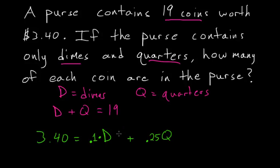Now we have two equations and two unknown variables. From the first equation, we can simplify it and solve for one of the variables, let's say quarters.